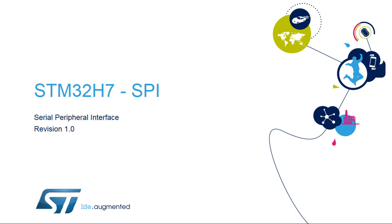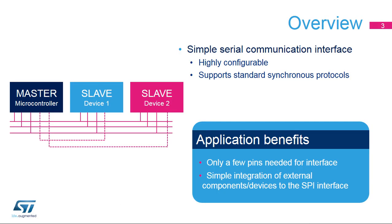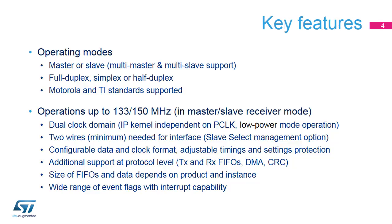Welcome to this presentation of the STM32 Serial Peripheral Interface. The Internal Serial Peripheral Interface, or SPI, provides a simple communication interface, allowing the microcontroller to communicate with external devices. This interface is highly configurable to support many standard protocols. Applications benefit from the simple and direct connection to components, which only requires a few pins. The STM32 SPI offers various operating modes that are explained in more detail in this presentation.